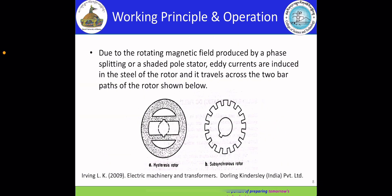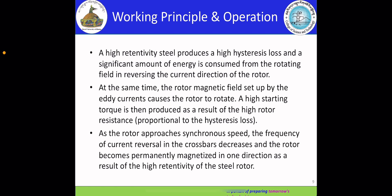My name is Tritrim and I will be talking on the working principle and operation of the hysteresis motor, as well as the speed-torque characteristic graph. As you can see here, due to the rotating magnetic field produced by phase splitting or a shaded pole stator, eddy currents are induced in the steel of the rotor and travel across the two bar paths of the rotor shown below.